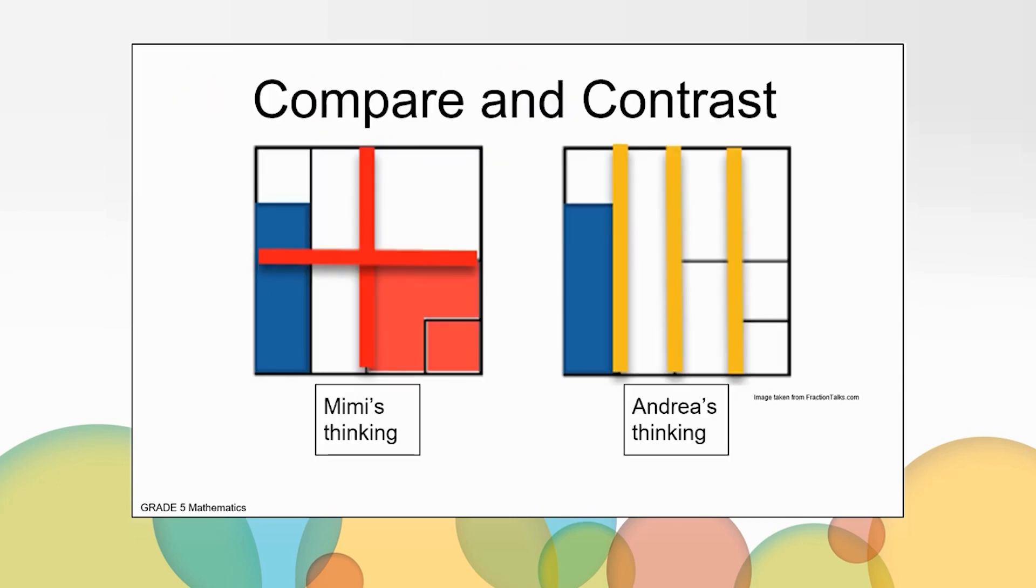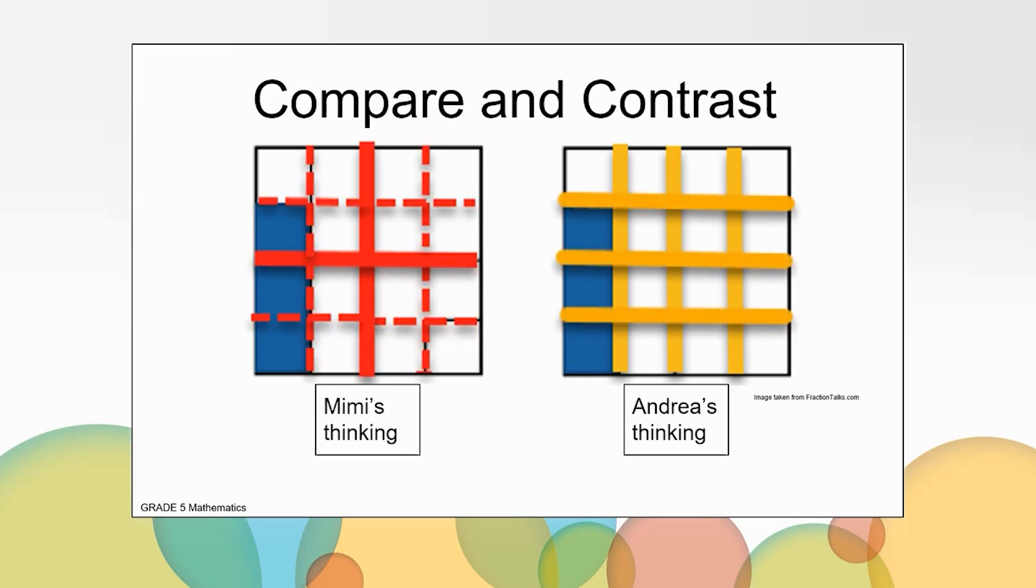Let's look at Mimi and Andrea's thinking. What's the same and what's different? I noticed that they both partitioned the large square into fourths. Mimi partitioned her square into quadrants by mentally drawing two lines forming a cross with four squares. Andrea partitioned her square by mentally drawing three lines vertically into fourths. They both then broke up their squares into smaller partitions of sixteenths and then counted how many of those sixteenths were shaded blue. They both arrived at the same fraction of three sixteenths.